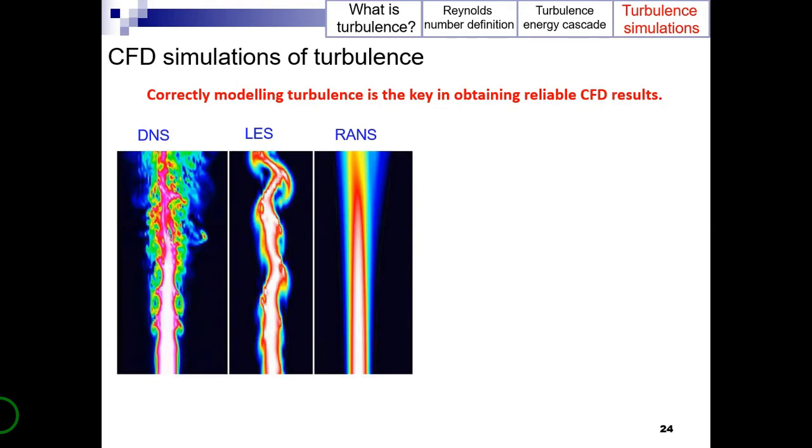I have explained briefly these methods in another video in my channel named DNS, LES, and URANS. Before I explain the difference between these methods, it is worthy to have a general idea of the degree of accuracy of these methods in the prediction of a turbulent jet, which is shown in the following picture.